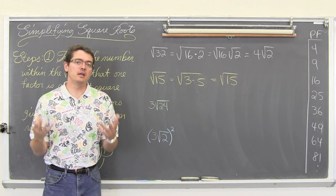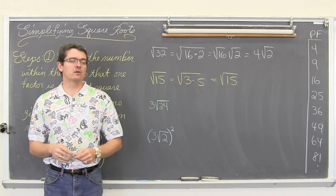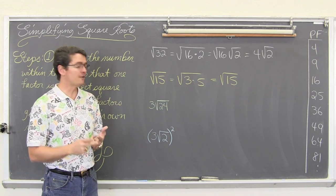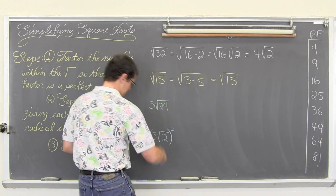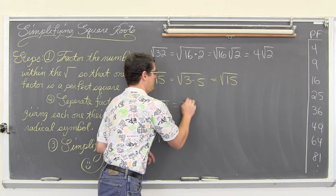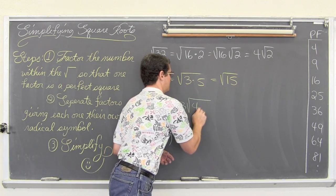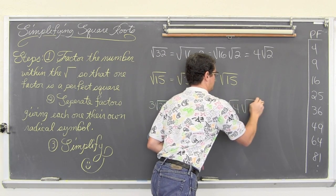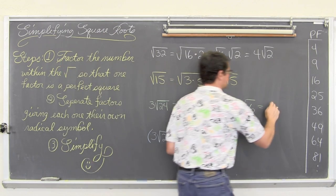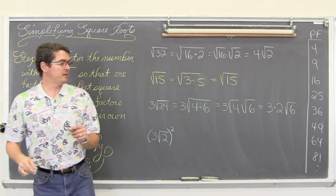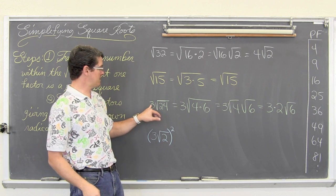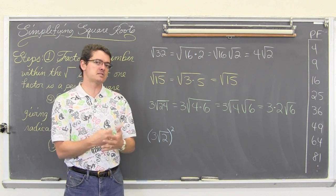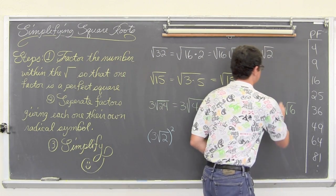Next: three times the square root of 24. What perfect square goes into 24? Factor pairs are 1 and 24, 2 and 12, 3 and 8, and 4 and 6 — and 4 is a perfect square. So this can be rewritten as 3 times the square root of 4 times 6. Giving each factor its own square root symbol, the square root of 4 equals 2. Notice that 3 times 2 — the leading coefficient is touching the square root symbol, indicating multiplication — so 3 times 2 equals 6, giving us six times the square root of six.